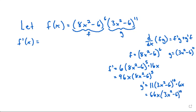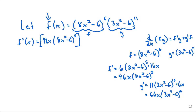Now we've identified f, g, f prime, and g prime, so we can plug into the product rule. Note the notation may be slightly confusing since I'm using f for both the overall function and one of the components — that's just typical notation. So f prime times g gives us: 96x times 8x squared minus 6 to the power of 5, times 3x squared minus 6 to the power of 11.